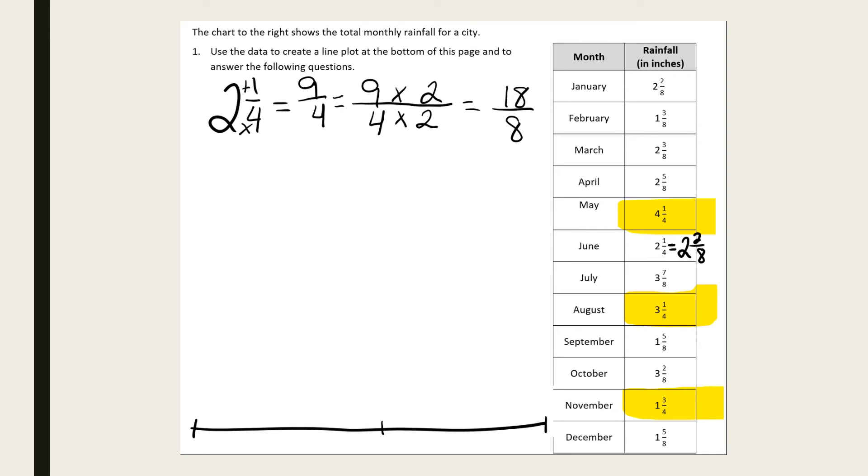And when I look at my chart, I see that we have a 1, we have 2's, and 3's. So I need my number line to start with 1.